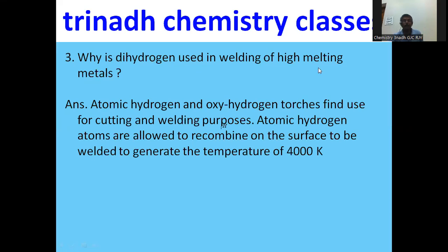Why is dihydrogen used in the welding of high-melting metals? Atomic hydrogen torches and oxy-hydrogen torches are used for cutting and welding purposes. Atomic hydrogen atoms recombine on the surface to be welded, generating a temperature of 4000 K.